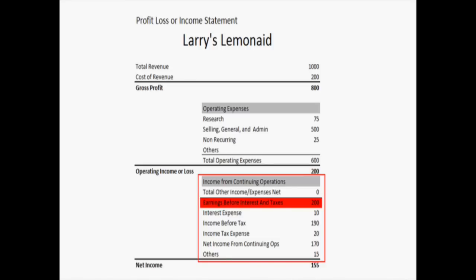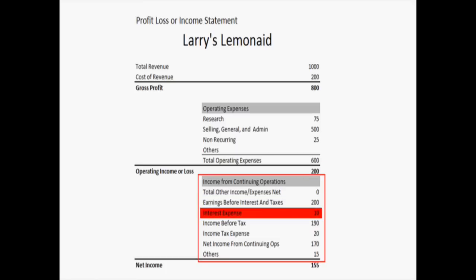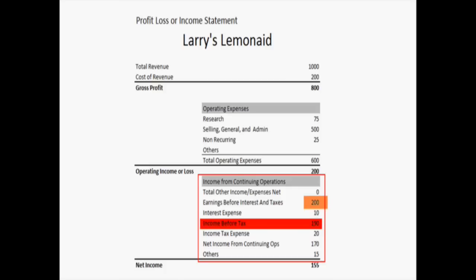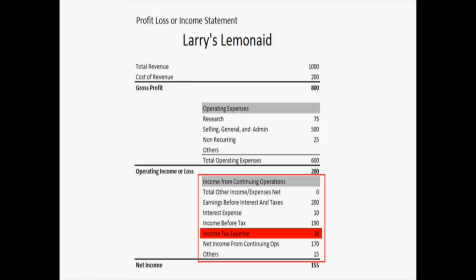Below that we have earnings before interest and tax, which in this case — since we didn't make any extra money — is still just $200 from that operating income or loss just above it. Let's say he had to spend $10 on servicing some debt. He may have got a small loan to buy some equipment, and that cost him $10 to pay for that debt. So the next line, income before tax, is that earnings before interest and tax, or EBIT, minus the $10 for interest expense. So now we have $190 before tax.